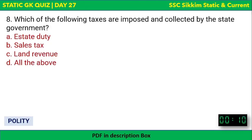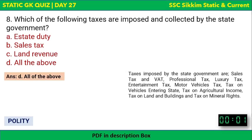Next question: Which taxes are both imposed and collected by state governments? Options are estate duty, sales tax, land revenue, or all of the above. The correct answer is all of the above. State governments impose sales tax, VAT (value added tax — though most is now replaced by GST), professional tax, luxury tax, entertainment tax, motor vehicle tax, tax on land and buildings, and tax on mineral rights.